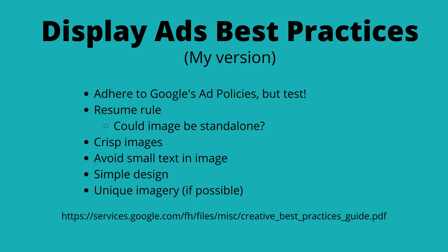Have some crisp images. Google says avoid text overlays; I'm going to say avoid small text in the image. This is because we all have mobile devices and they aren't as large as desktop computers, so you have to take that in mind as you're creating these assets — sometimes they will shrink, and will the user be able to see that image clearly on their device? Next, have a simple design. And the last one is have unique imagery if possible. I'm going to share with you a tool that has free stock photography and free elements, but if you have unique imagery that looks good for your business, I'd recommend using that before any type of stock photography.